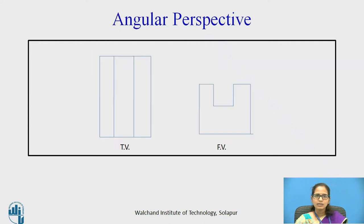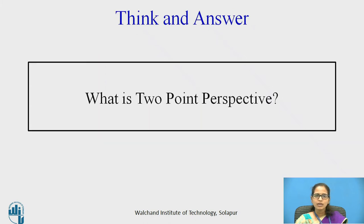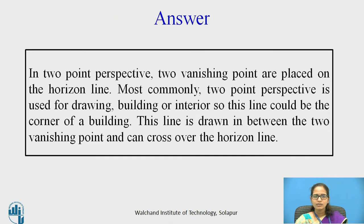This is the angular perspective. In this, the top view and the front view of the object is given. In the two point perspective, the two vanishing points are placed on the horizon line. Most commonly, the two point perspective is used for drawing buildings or interiors. This line could be the corner of a building, drawn in between the two vanishing points and can cross over the horizon line.